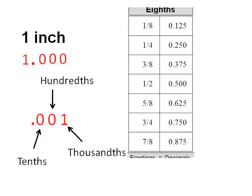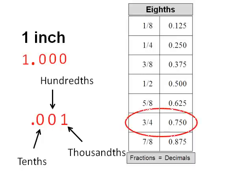Looking at the conversion chart, you see that three-quarters of those 1,000 units in an inch would be 750, stated as 0.750, because it shows three numbers after the decimal point.